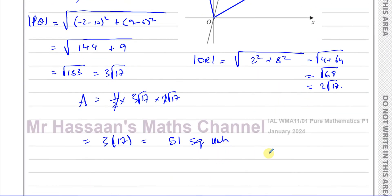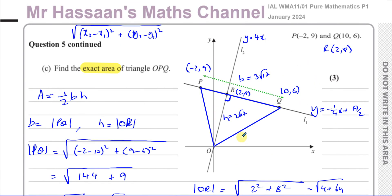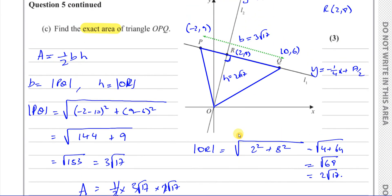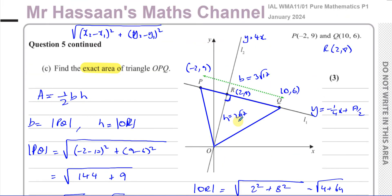That completes question five. Most of this question is essentially IGCSE-level coordinate geometry, so it's relatively straightforward. Other questions from this paper and from the topic of coordinate geometry for P1 can be found in the playlists. Thank you for watching.